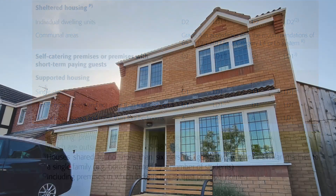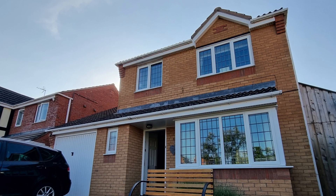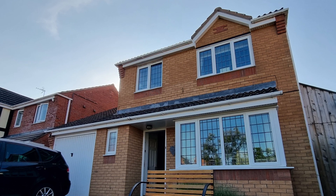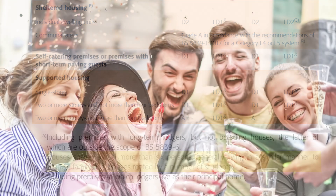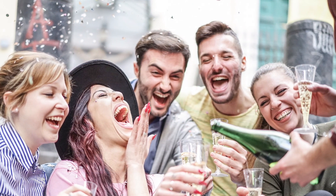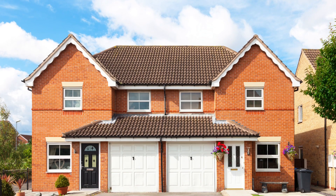So a family home with even a long-term lodger is still classed as a single-family dwelling. And note B helps us understand that shared houses are houses shared by no more than six persons generally living in a similar manner to a single family — e.g. houses rented by a number of students. So house-sharing by students looking to dodge halls of residence could still fall in this category rather than become an HMO.